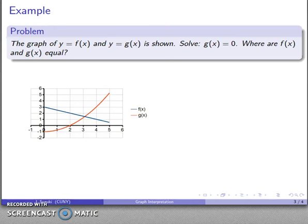If you forget them, graph interpretation becomes a lot more complicated. I have the graphs of two things. Here's y equals f(x) in blue, and y equals g(x) in orange, and the graph is shown. I want to solve g(x) equals zero, and I want to find where f(x) and g(x) are equal.